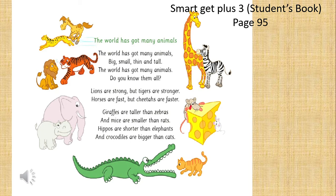The world has got many animals — big, small, thin and tall. The world has got many animals. Do you know them all? Lions are strong, but tigers are stronger. Horses are fast, but cheetahs are faster. Giraffes are taller than zebras.